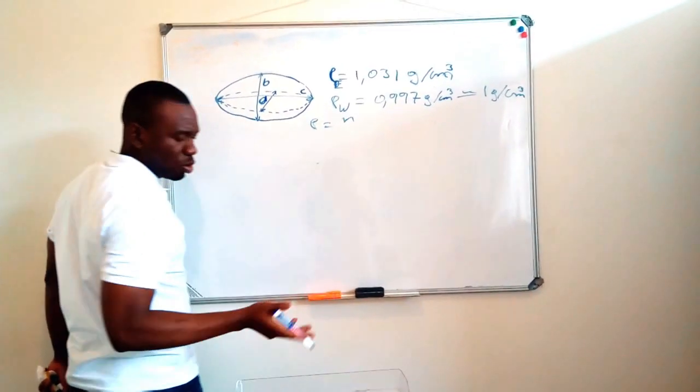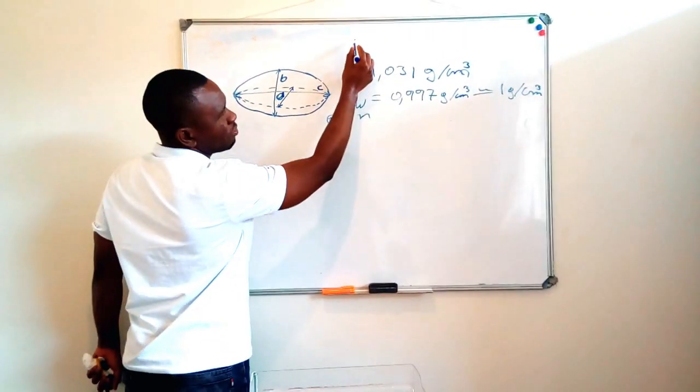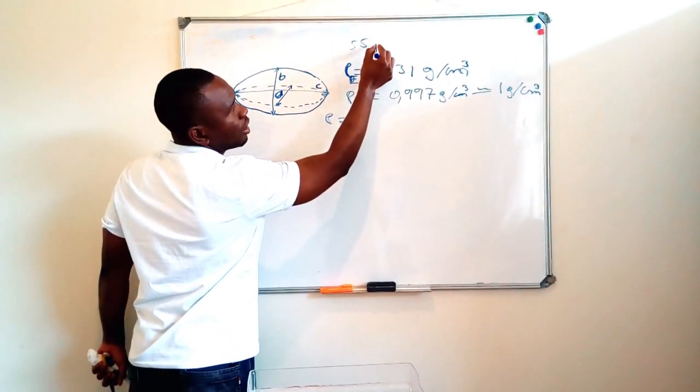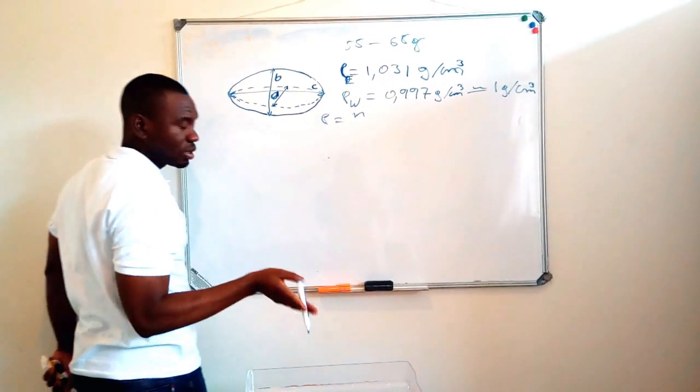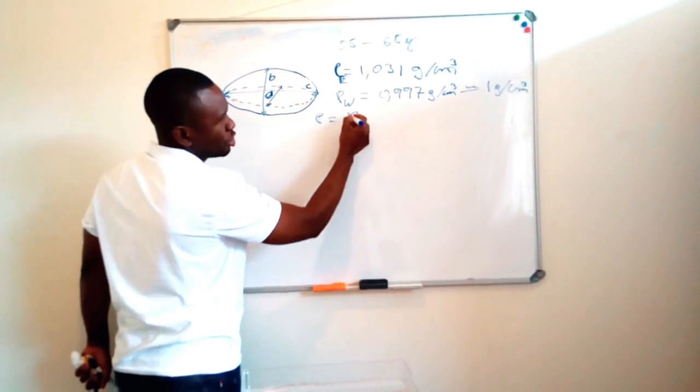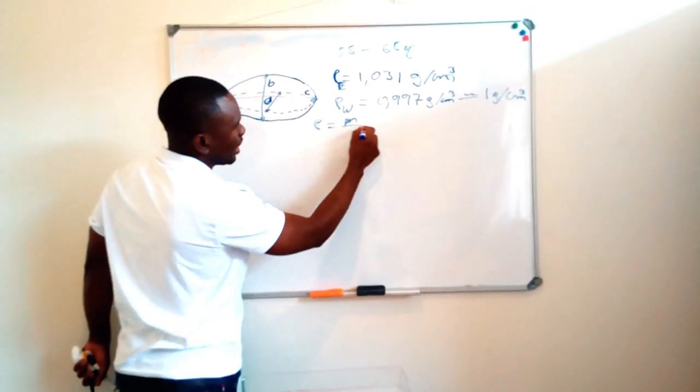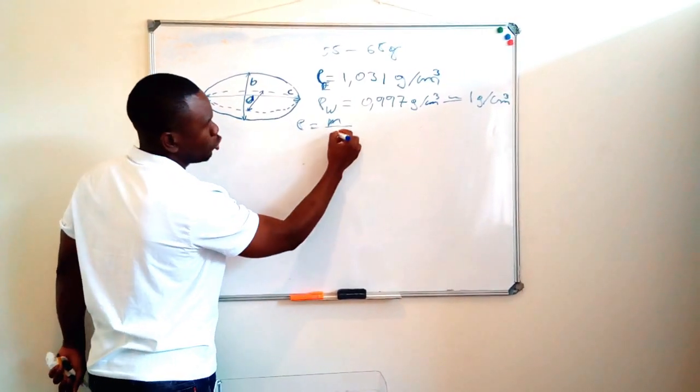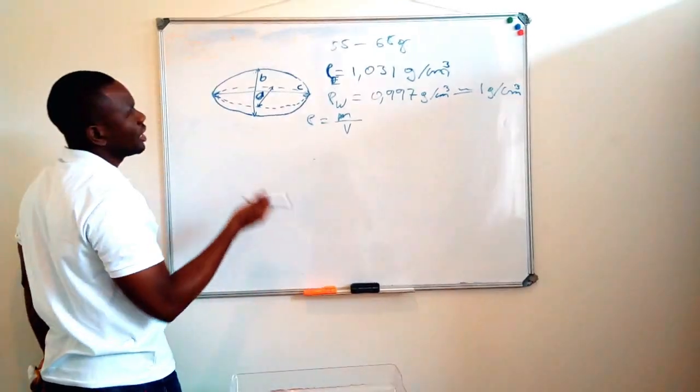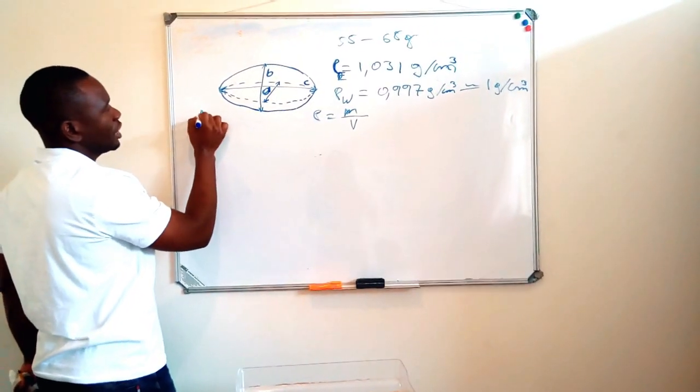And then we all know that if you want to get a density, what you do is you take the mass of the egg. These are normal size, like average-sized eggs, so I can say they are between 50 to 65 grams. So what you do is for you to get a density, you take the mass of your egg and divide it by the volume.